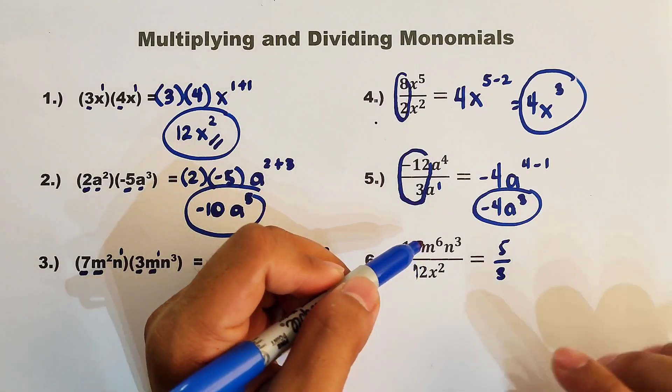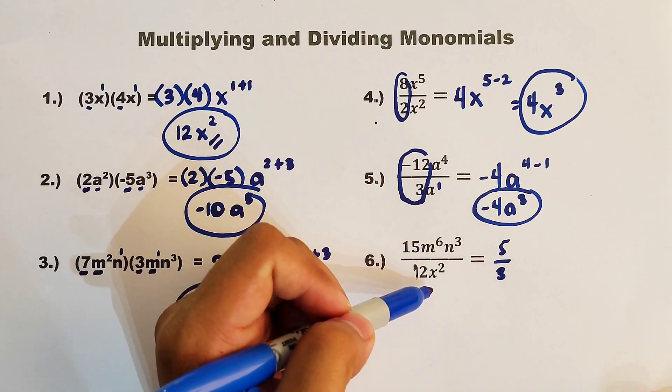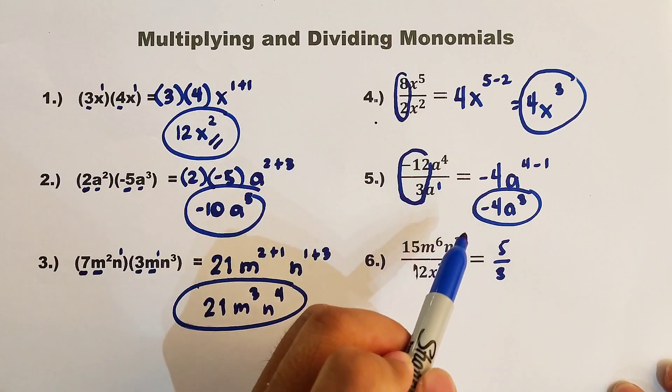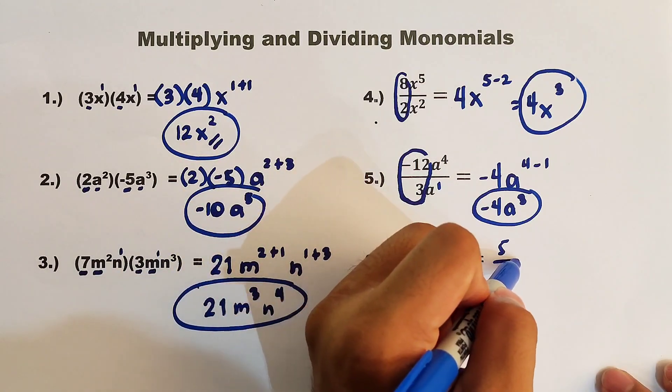Then, as you can see, the problem here is that the variables from the numerator and the denominator are not the same. So, we cannot do something about it. It will retain as m raised to 6, n raised to 3, over x squared. So, what will be the answer? This is the answer.